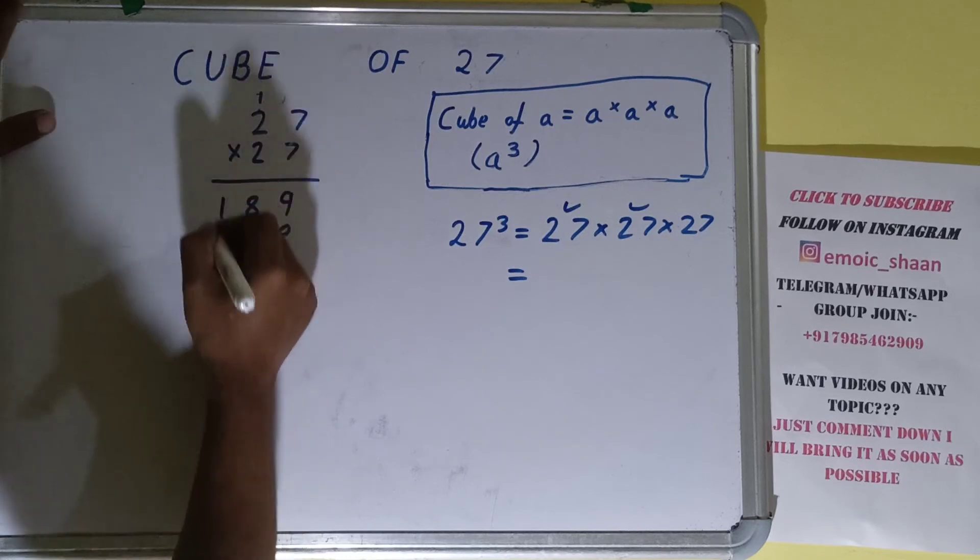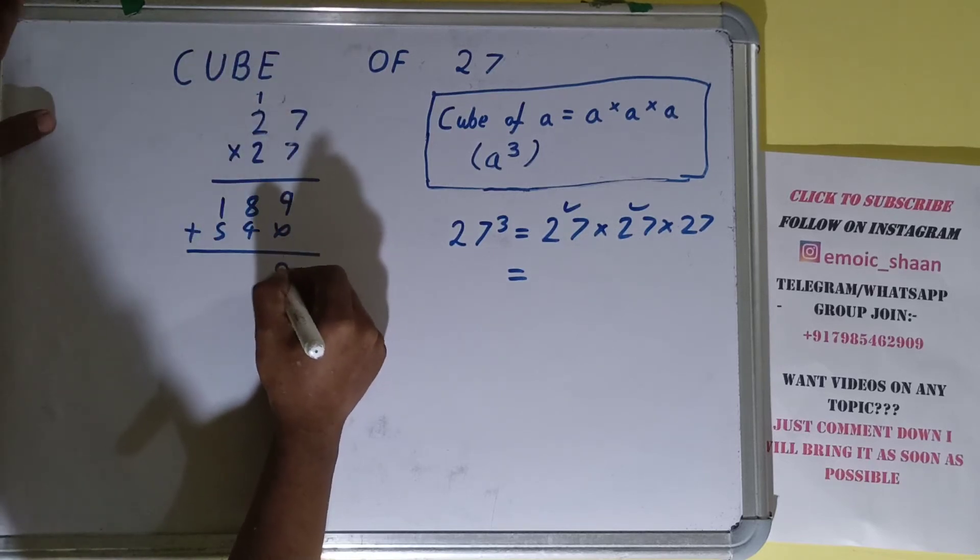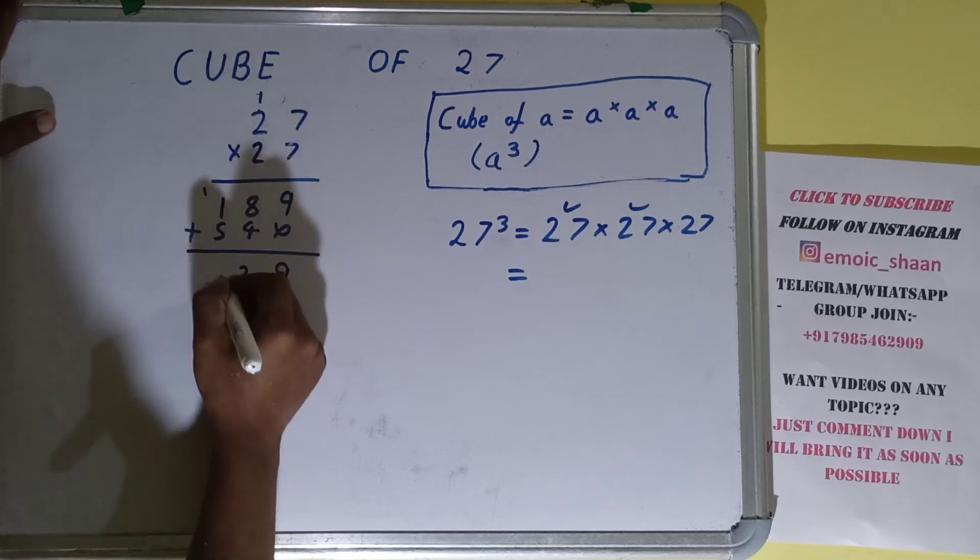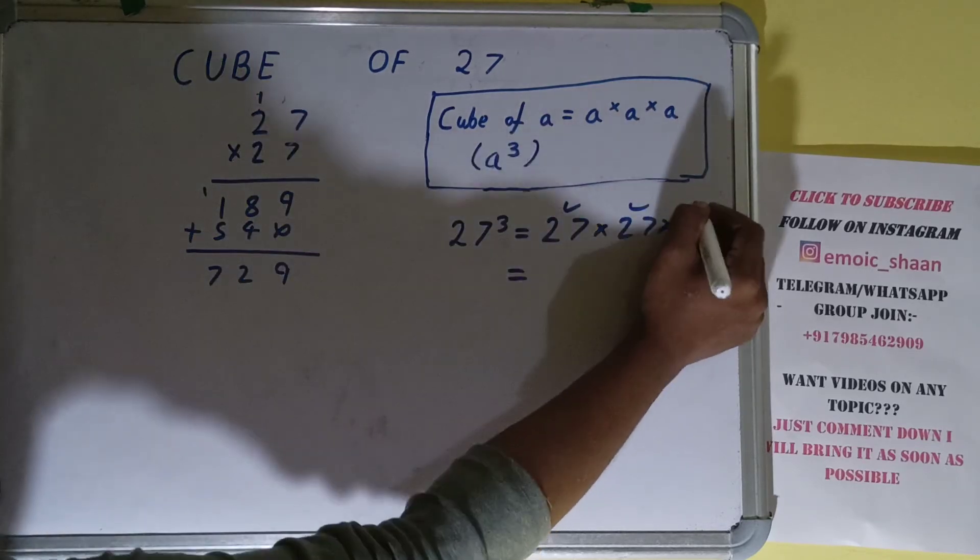Just add them - we get 729. Now with this answer, we'll multiply the third one.